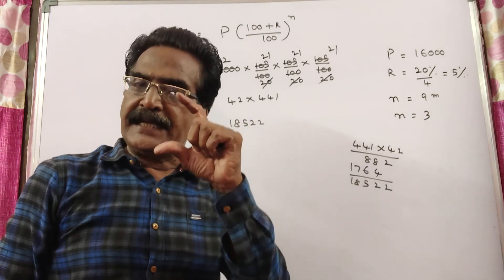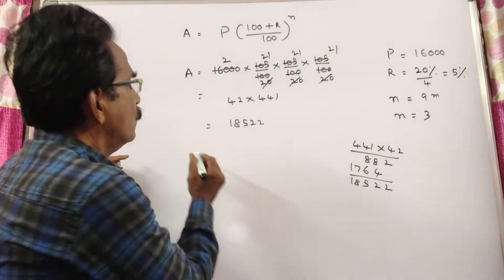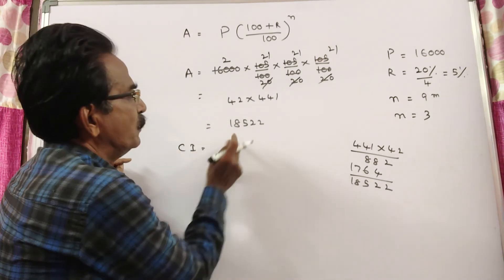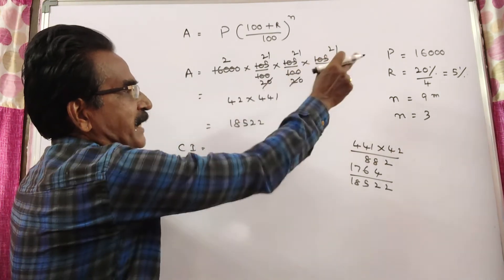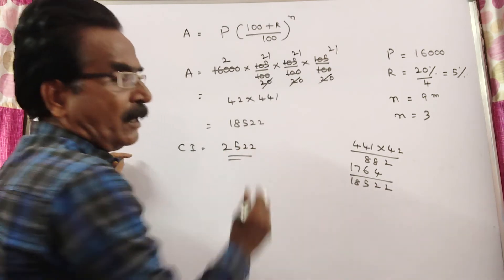But we want only compound interest. Let us subtract the principle. So, compound interest is equal to 18,522 minus 16,000. 2,522 is your answer, friends.